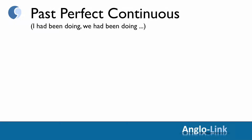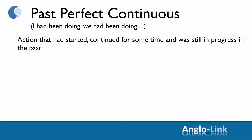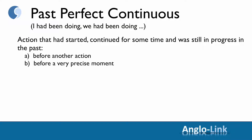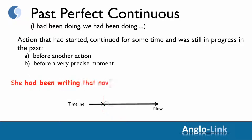Moving on to the next tense, which was past perfect continuous — I had been doing, we had been doing, etc. And as you remember, this is an action that had started, continued for some time, and was still in progress in the past, either before another action or before a very precise moment. For example: she had been writing that novel for a few months when she became ill.